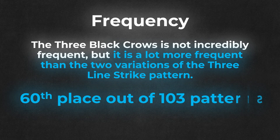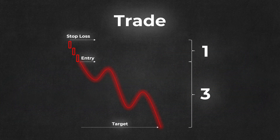This pattern ranks 60th place out of the 103 patterns in terms of frequency. The three black crows pattern is very simple to detect and understand, but it has a disadvantage: the pattern sometimes can be a small trend in itself, which means that trading can be difficult because the logical stop-loss placement may be too far away from the entry point. The trigger can occur at the open of the next candle, and the stop must be above the highest point of the pattern with a target three times larger than the stop. The trader must assess if there is leeway for price to reach the target.